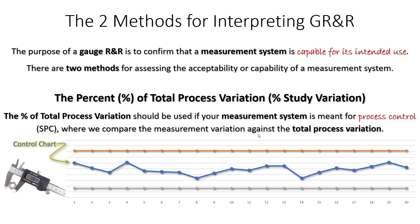The other way you might use a measurement system is for process control. Sometimes we use measurement systems for product control — determining whether something is conforming or not. Other times, we take measurements from our process and put them into a control chart to evaluate and control our process. In the process control scenario, the right method for evaluating your measurement system is called the percent of total process variation, where we compare measurement system variation against process variation.